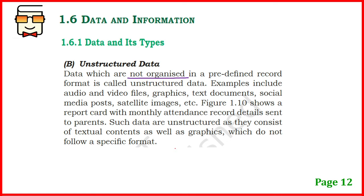Unstructured data is the second category, and it is completely opposite to structured data. As the name suggests, this kind of data is not organized at all. It consists of different types of content within a single unit of data. For example, a banner for a political party will have some text written on it, it will have certain images, and it can have content of a mixed variety. There is no specific structure — it does not follow rows, columns, or any particular format. It is mixed kind of content.